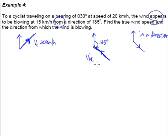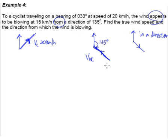There are many possible pitfalls here, so please make sure you read the question very, very carefully. Write down what you know about VC and what you know about VWC. The next thing is what we're supposed to find — the true wind speed, which of course refers to VW. So we must think: I have this, I have that, but how am I going to get VW? The key lies in the vector diagram.